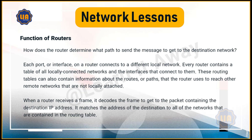How does the router determine what path to send the message to get to the destination network? Each port, or interface, on a router connects to a different local network. Every router contains a table of all locally connected networks and the interfaces that connect to them. These routing tables can also contain information about the routes, or paths, that the router uses to reach other remote networks that are not locally attached.